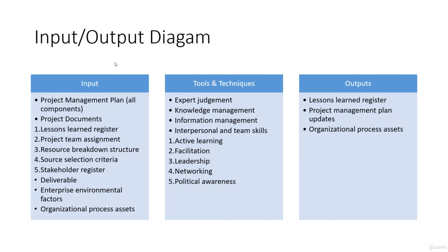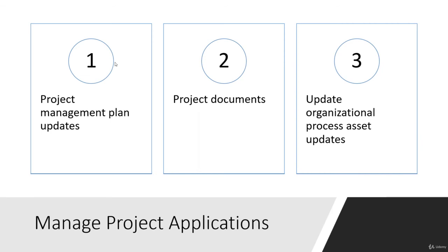Just as you receive a lessons learned register as input, you are going to produce one as output. Then you have project management plan updates and organizational process assets — any updates you make to the project management plan, and any documentation you create, will be recorded as organizational process assets. For example, if you started using Scrum and created a product backlog template, that will serve as a template for other projects.